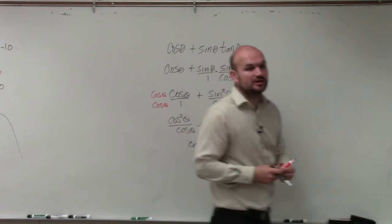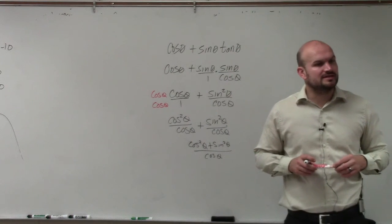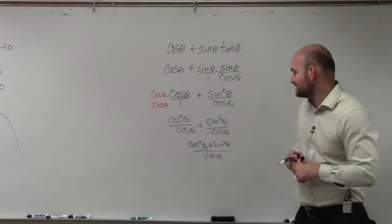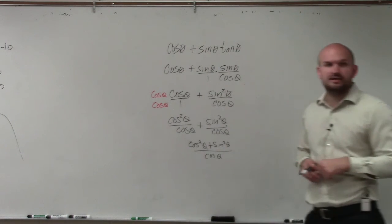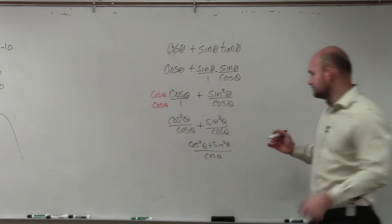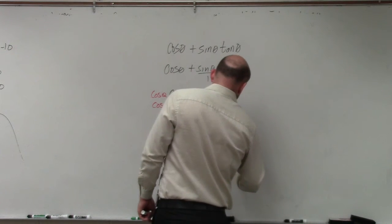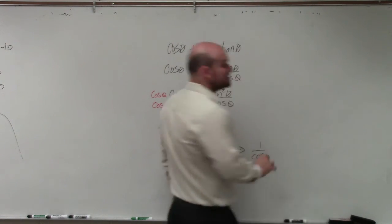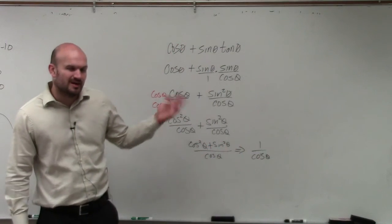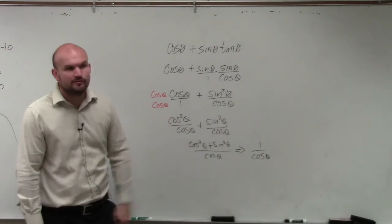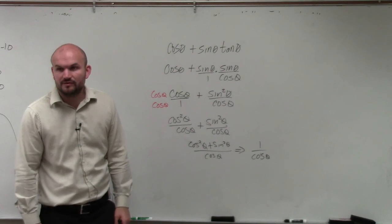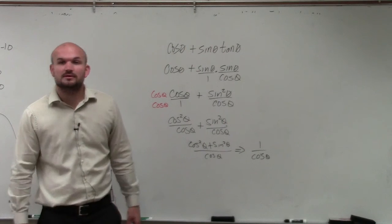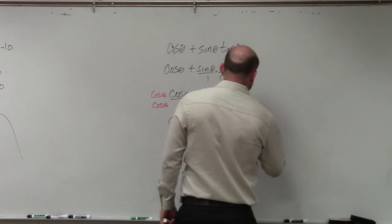Now that they have the same denominators, I can combine the numerators over the denominator. If I look at my trigonometric identities now, I see that I have cosine squared and sine squared. So when you look at your Pythagorean identities, what does sine squared plus cosine squared equal? One. So that's one over cosine. Now this is one trigonometric identity — it's kind of like the reciprocal. What is one over cosine of theta equivalent to? Secant. So that is your final answer.